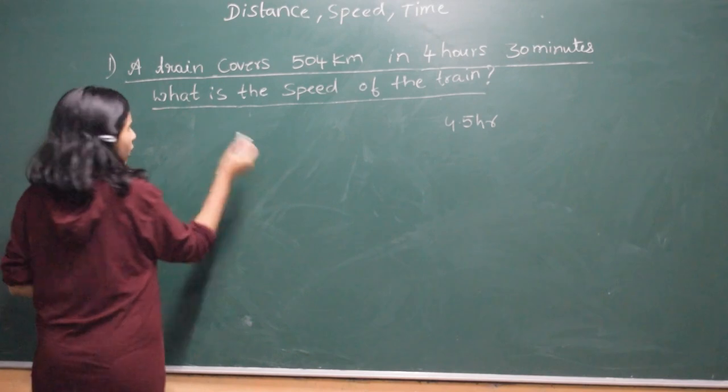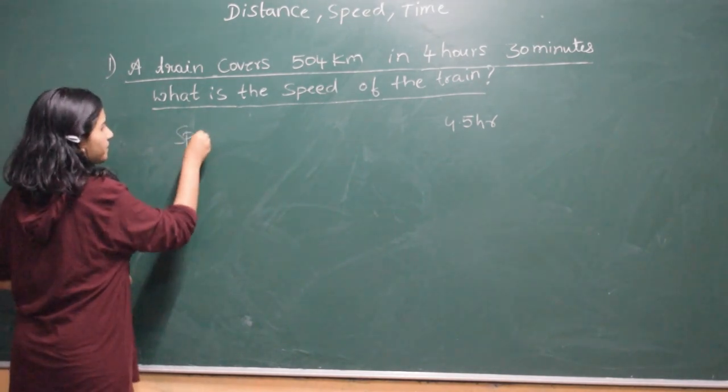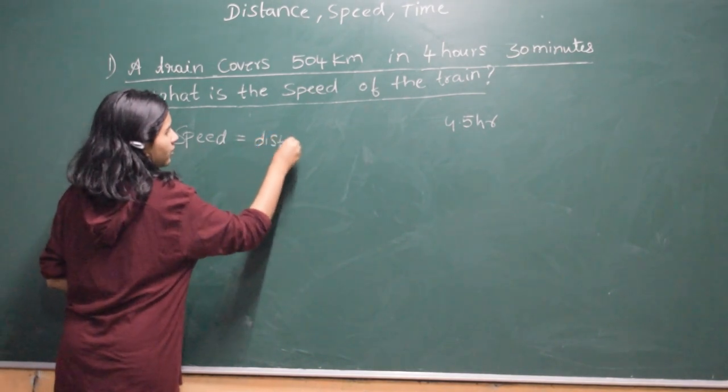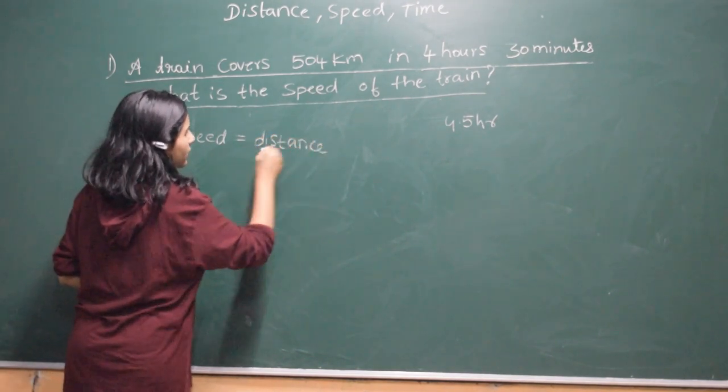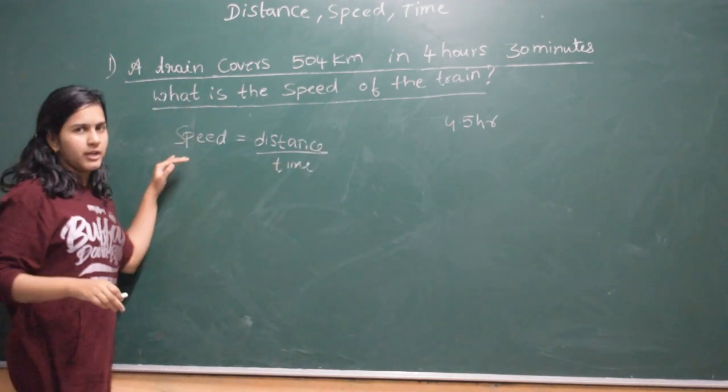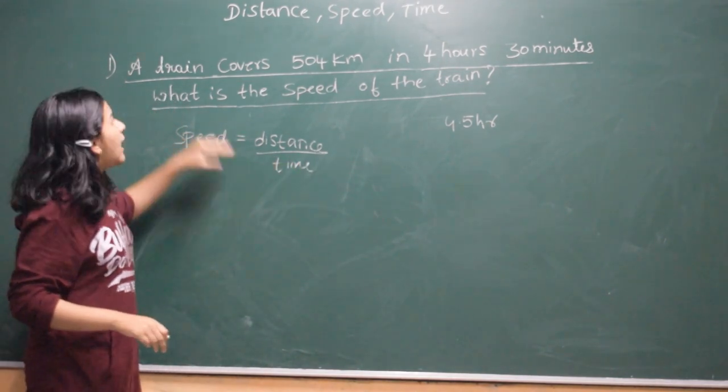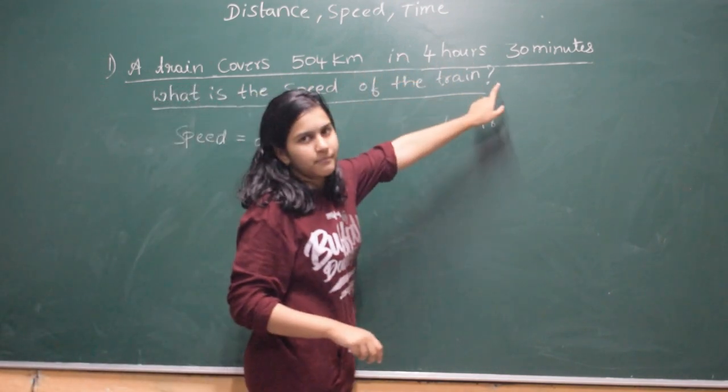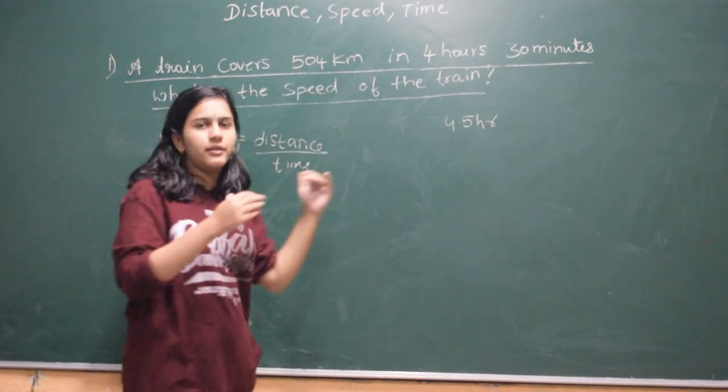Now we know the formula of speed. Speed is equal to distance by time. In this question, if you observed correctly, we have the distance as well as the time. So we can easily substitute and solve it.